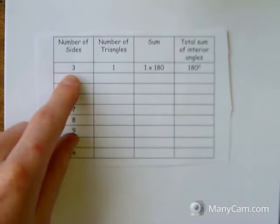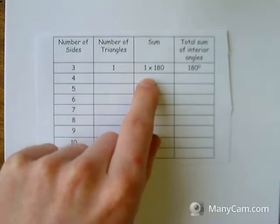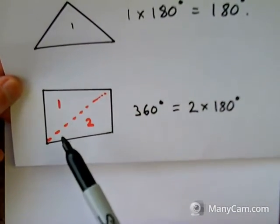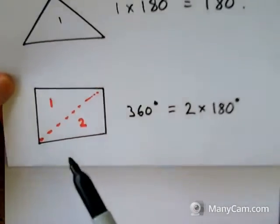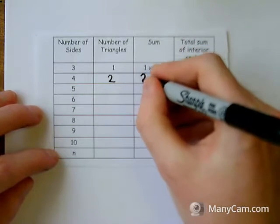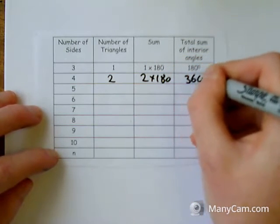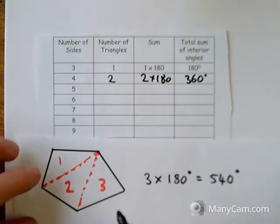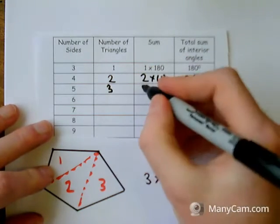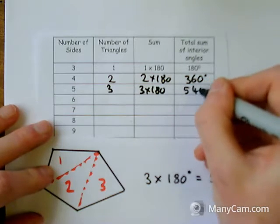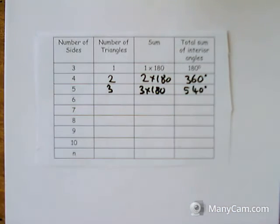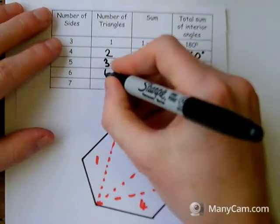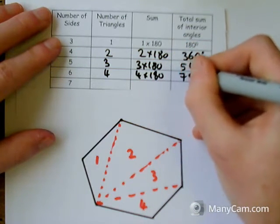When I had a triangle with three sides, there was one triangle so I did one lot of 180, which gives me 180. For the quadrilateral, I had two triangles, so two lots of 180 gives me 360 degrees. For the five-sided shape, I split it into three triangles — three lots of 180 gives me 540. Then for the hexagon, a six-sided shape, I split it into four triangles, so four lots of 180 gave me 720.